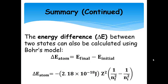The energy difference between two states can also be calculated using Bohr's model. So, remember, the energy difference in the atom is the final state minus the initial state. So, we can also express this change in energy of the atom using the Bohr equation, where we have negative 2.18 times 10 to negative 18 joules, multiplied by the atomic number squared, and then 1 over the final state squared minus 1 over the initial state squared.